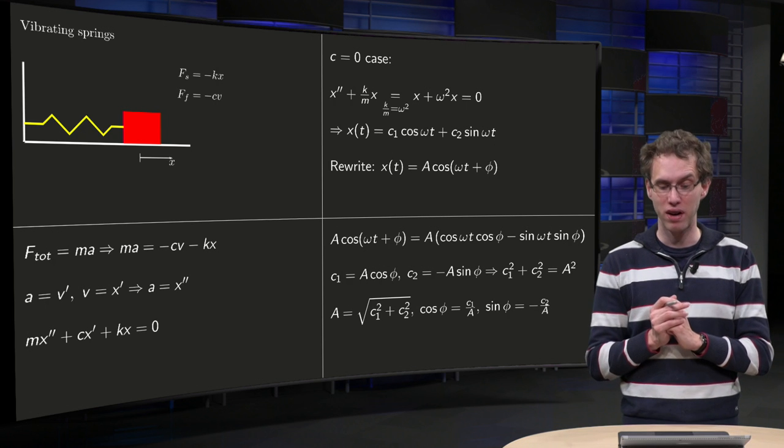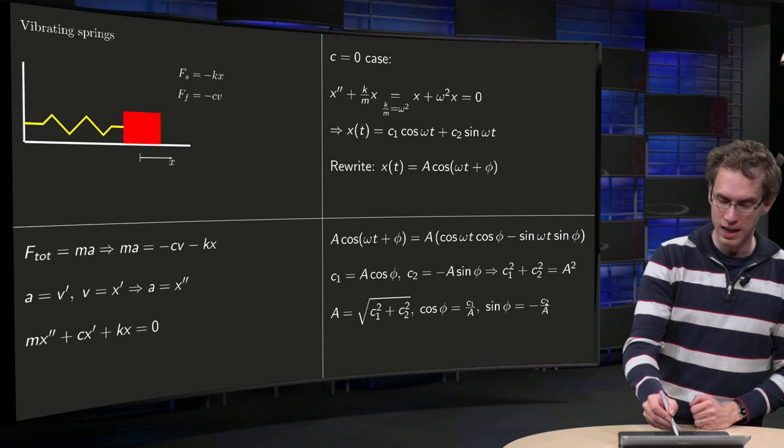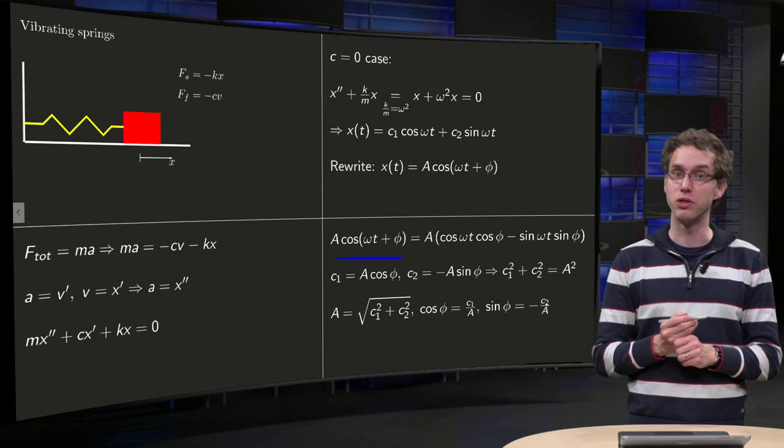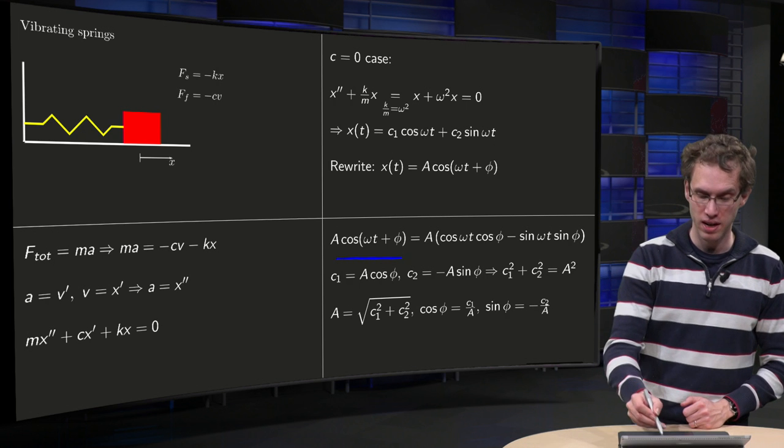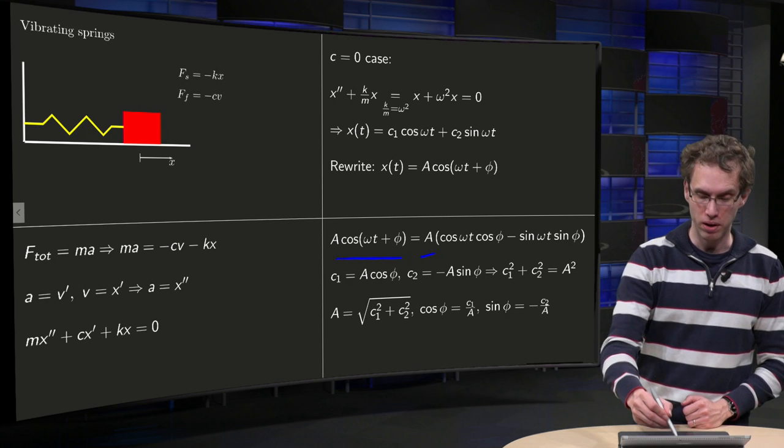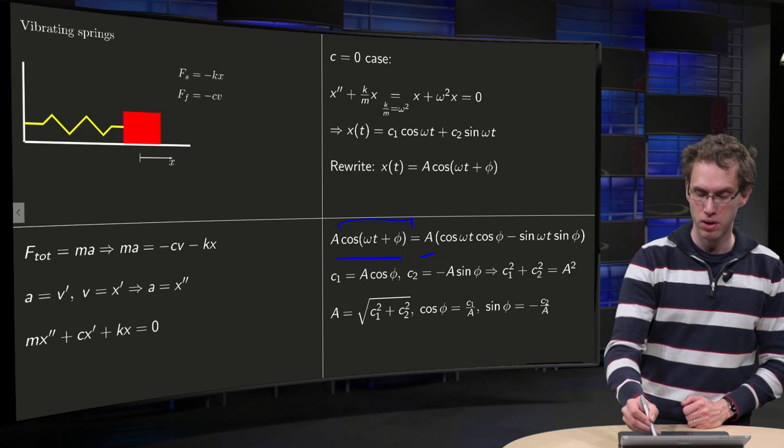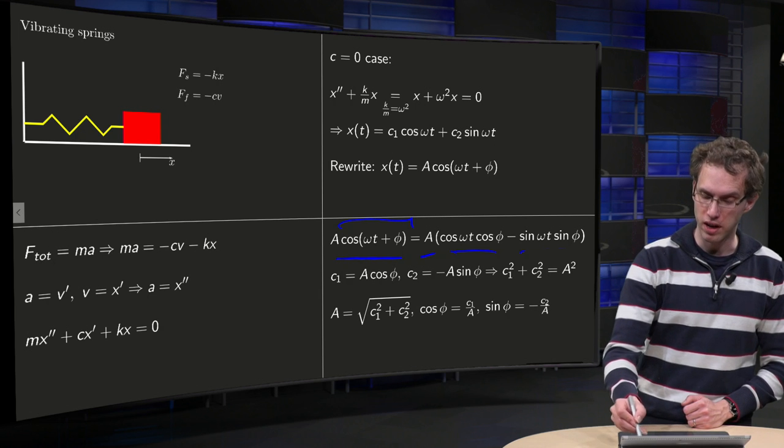First, how can we find them? Well, you can rewrite A times the cosine of omega t plus phi as A times, work out this formula with cos omega t cos phi minus sine omega t sine phi.